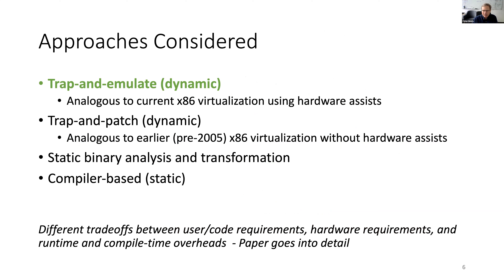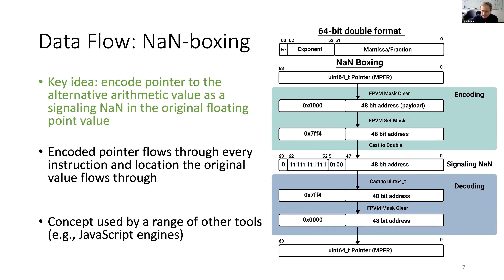What I'm mostly going to talk about is trap and emulate — this is the approach I'll describe, which is basically how a traditional virtual machine monitor works as well. In all these approaches we have to maintain data flow. In the original binary program, you have floating point numbers flowing through registers and memory locations, and we want to replace these with alternative numbers. So we need pointers to those alternative numbers, and what we do is stash them in the original floating point numbers using NaN boxing — a technique you may be familiar with from JavaScript engines.